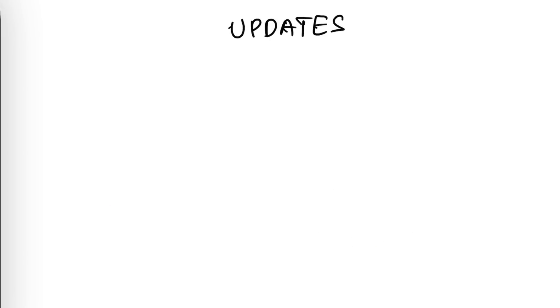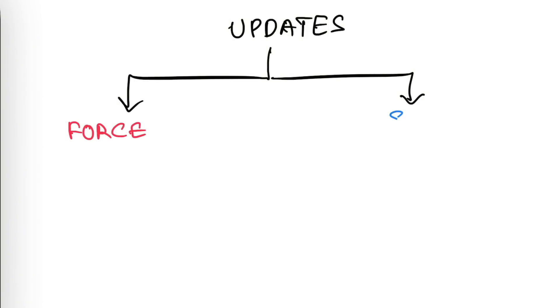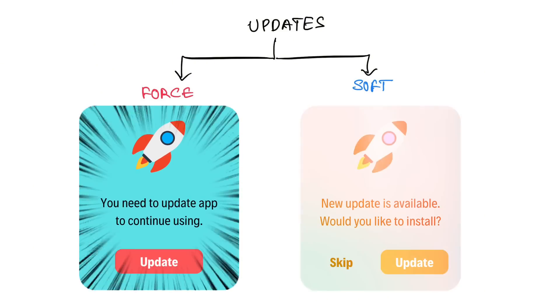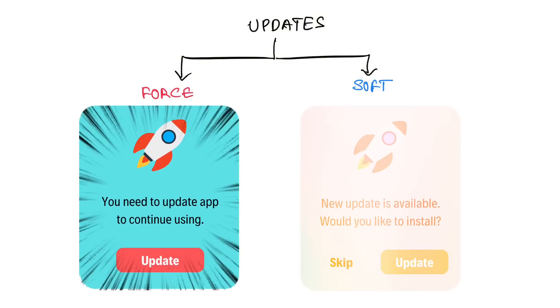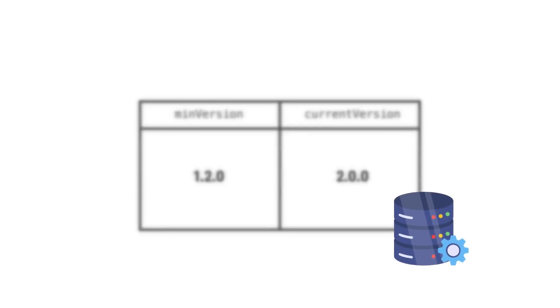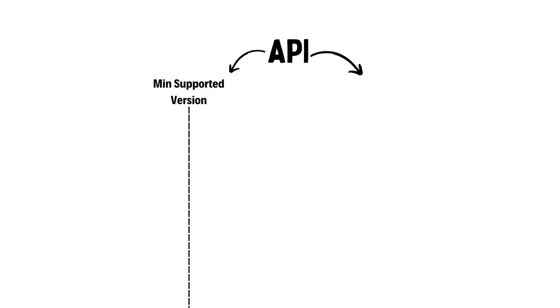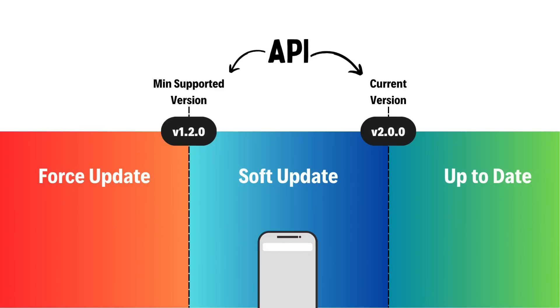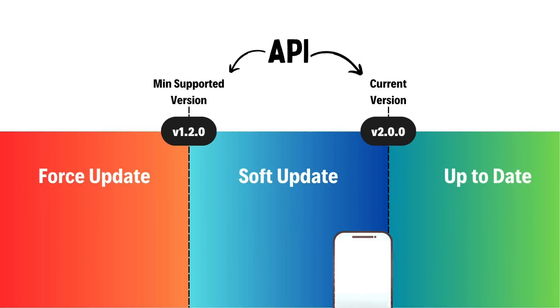There are two main types of updates: force update and soft update. We'll discuss what they are, how they help publishers keep users updated, and their importance in the release process. You can implement this with one simple API that tracks the last supported version and the current version. If the installed version is less than the last supported version, the user gets a force update; if it's between the supported and current version, they get a soft update — as simple as that.